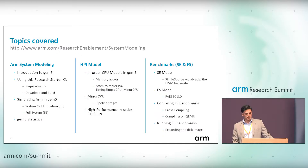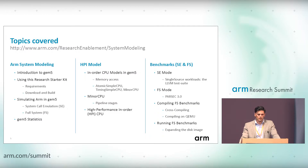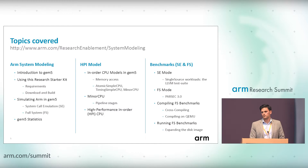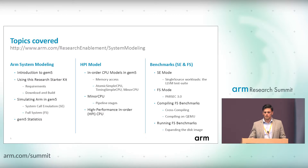We cover benchmarks for both SE and full system simulation modes. In SE mode we use simple single-source workloads from the LLVM test suite just to show how it works. In FS mode we use Parsec 3, the benchmark suite used by gem5 users and introduced in the gem5 wiki. We show how to compile using two approaches: cross-compiling on an x86 machine, or compiling using QEMU — most people prefer an emulator for compiling benchmarks, so we cover both. We also cover how to change the disk image, expand it, copy files, and compile on another machine.